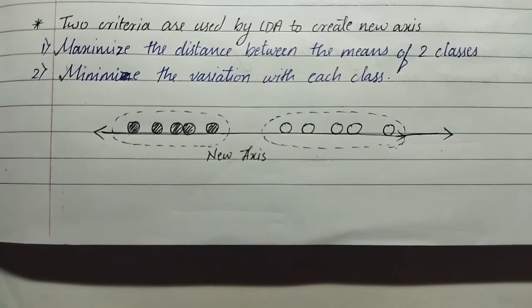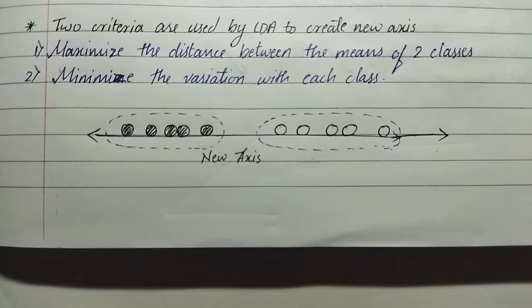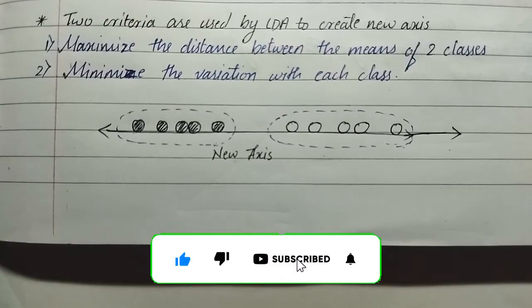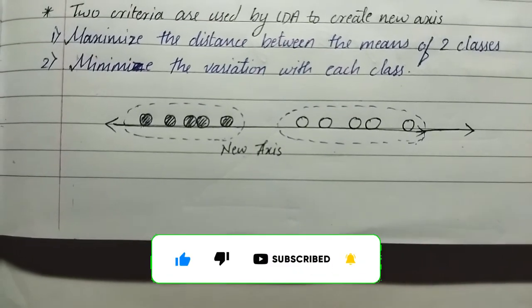This is the diagram that represents how a new axis is created. This was it for Linear Discriminant Analysis, and thank you for watching till here.